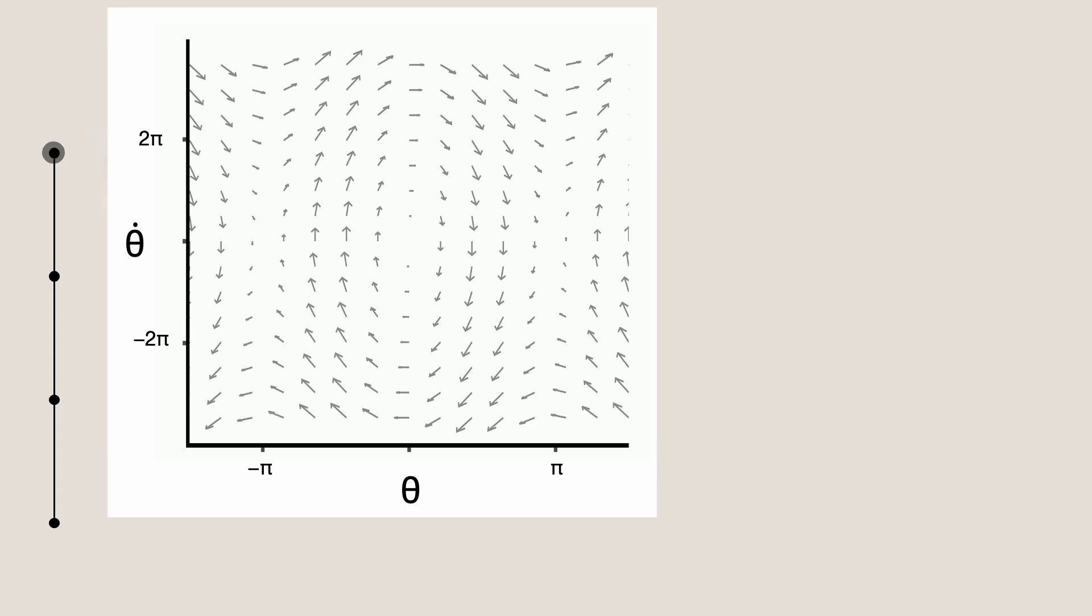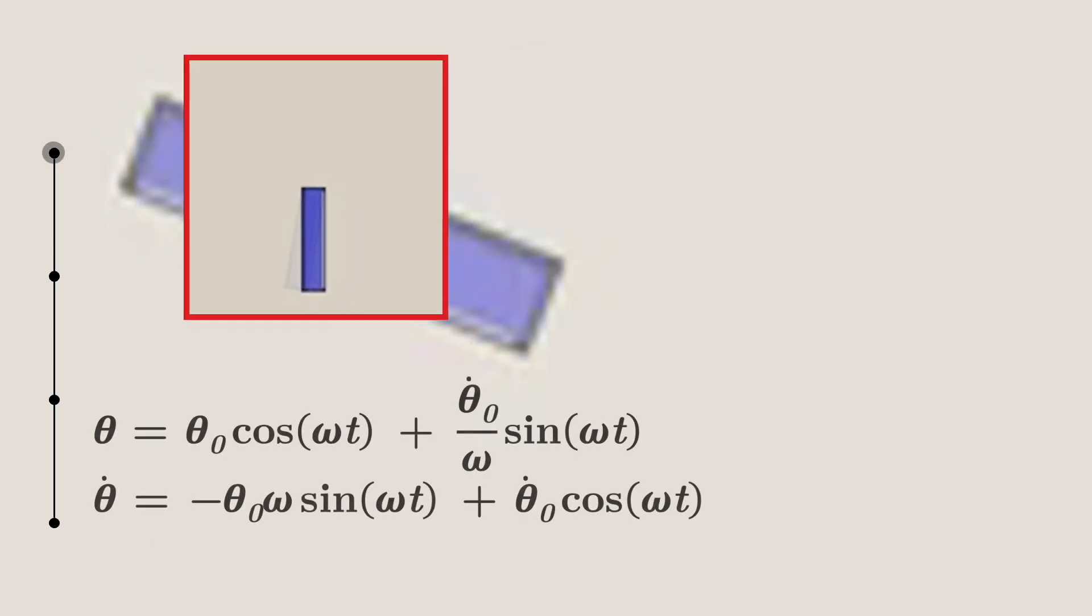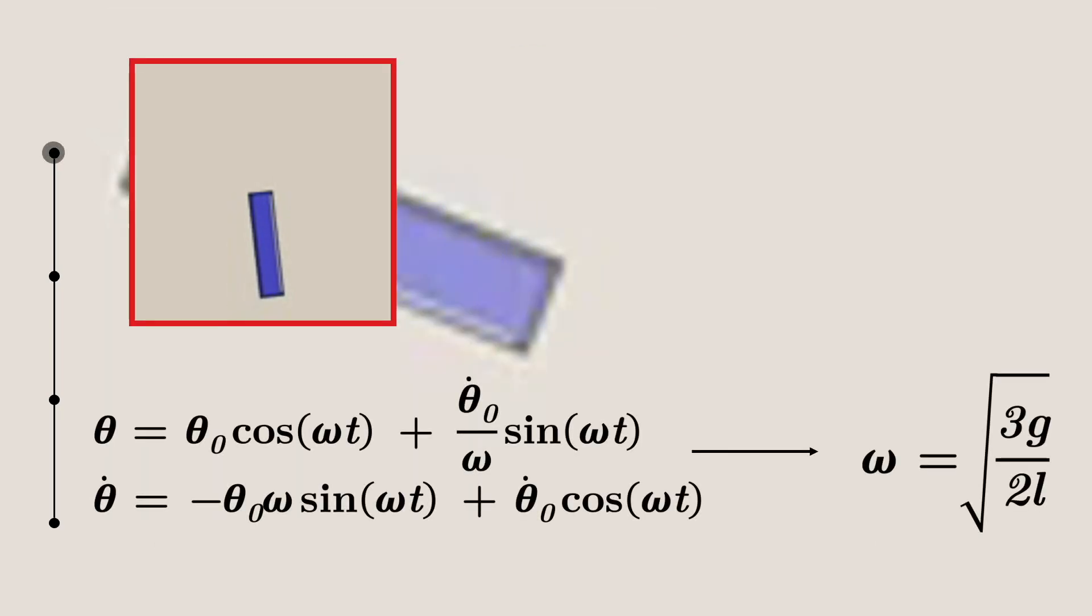They offer operable representations that deepen our understanding of the system and enable various scientific discovery tasks. For instance, scientists can identify equilibrium states and assess the long-term stability of the system. By linearizing the system near the equilibrium, important metrics like natural frequency can be derived.